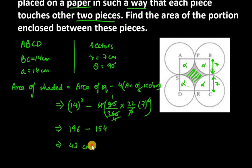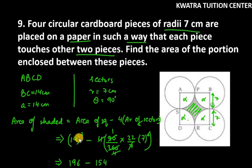So you will get 42 cm square. So area enclosed between these circles is 42 cm square. And this is the answer for question number 9.